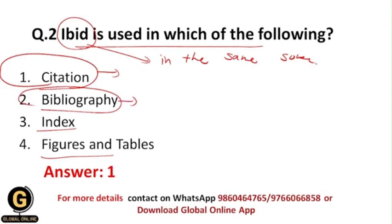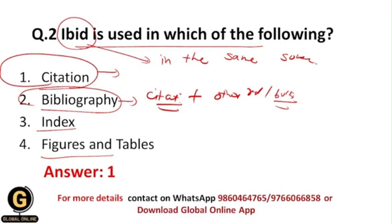Bibliography includes both citations/references and other references such as books — even those not directly referred to — but which contain information relevant to the research topic so readers can use these sources for further research or knowledge. IBID can be used in bibliography as well, but its primary use is in citation. Index gives information about what appears on which page number in the research report. Therefore, the correct answer is option 1: citation.